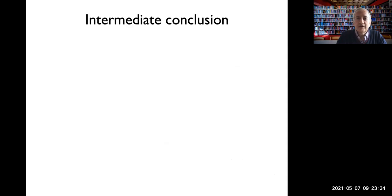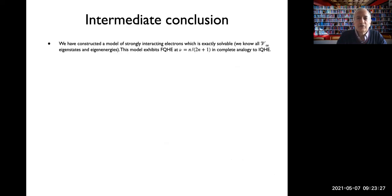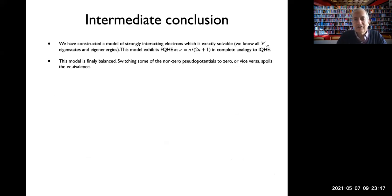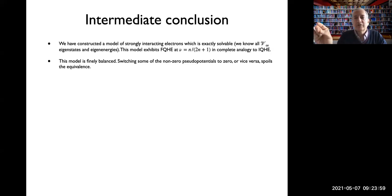The intermediate conclusion is that a model of strongly interacting electrons has been constructed which is exactly solvable, in the sense that all V-infinity eigenstates and eigenenergies are known. This model exhibits fractional Hall effect at these sequences in complete analogy to integer quantum Hall effect. The model is finely balanced: if any of the active Haldane pseudo-potentials are set to zero, or if any zero pseudo-potentials are turned on, the exact correspondence breaks down.